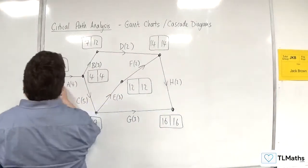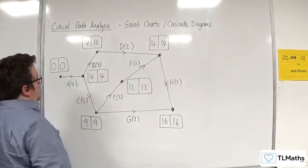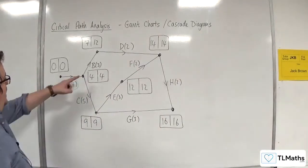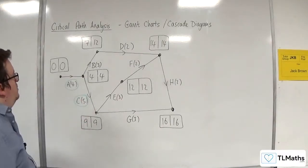Now because we've got 0, 0 and 4, 4, there's only one route out. That means that A is definitely critical. 4, 4, 9, 9 - 4 plus 5 is 9, so C is also critical.